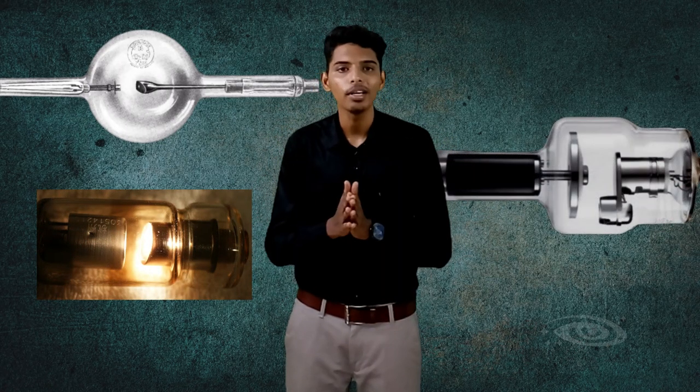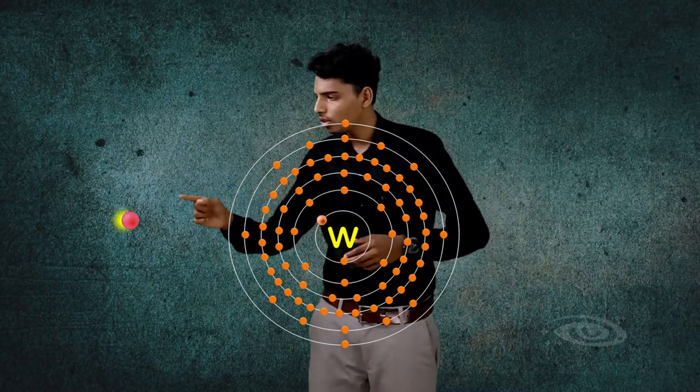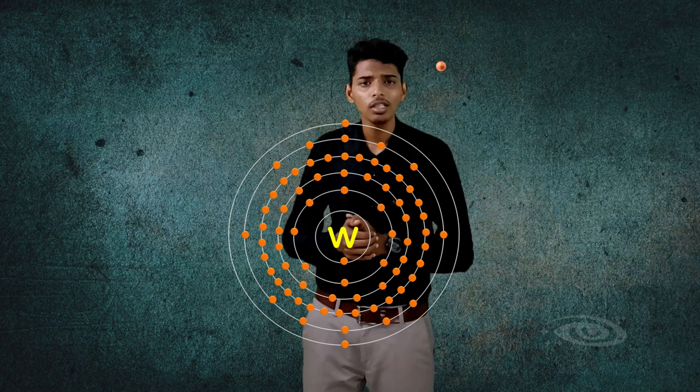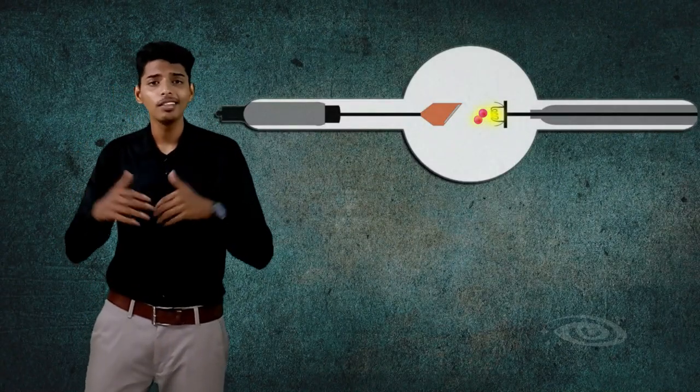This thermionic emission principle is used in the Coolidge tube, the stationary anode X-ray tube, and the modern rotating anode X-ray tube. Now, when this high-velocity electron hits the anode, it ionizes the electrons present inside the anode. Due to the law of conservation of energy, the energy is transformed into an enormous amount of heat and one percent X-radiation. Tungsten is used in the anode because its high atomic number produces efficient X-rays, and its high melting point allows it to withstand the enormous heat produced.